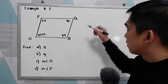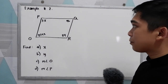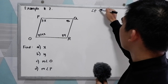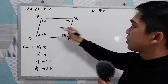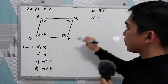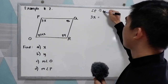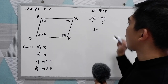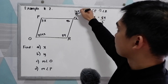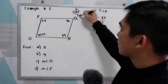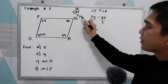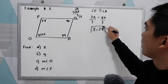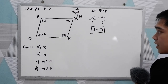Let's start with letter A — find X. We know that property number 2 states that opposite angles are congruent. So angle P is congruent to angle R. Substituting: 3x equals angle R, which is 84. Dividing by 3, x is equal to 84 divided by 3, which equals 28. Our value for X is 28.